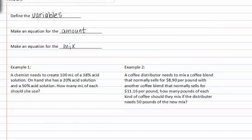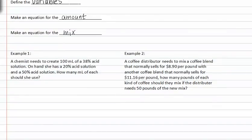Let's look at example one. In example one, a chemist needs to create 100 milliliters of a 30% acid solution. On hand, she has a 20% acid solution and a 50% acid solution. So these are her two acid solutions. She needs to create a 100 milliliter solution at this percent of acid.